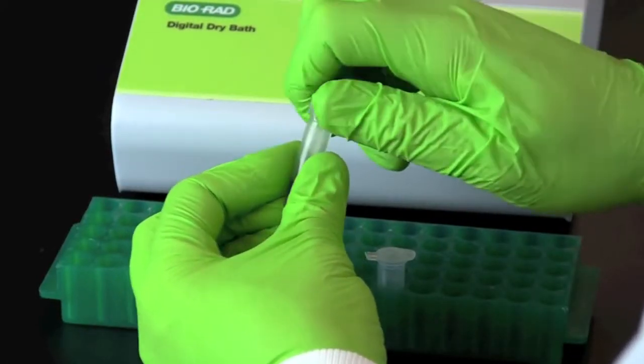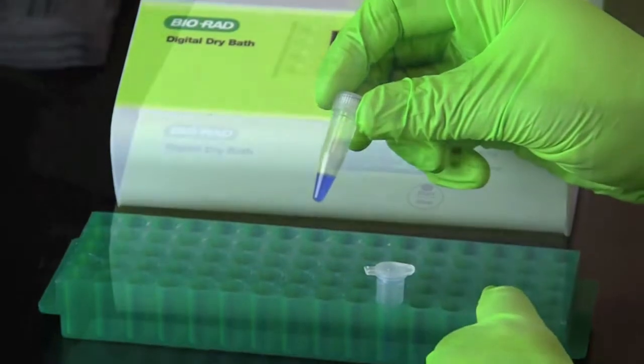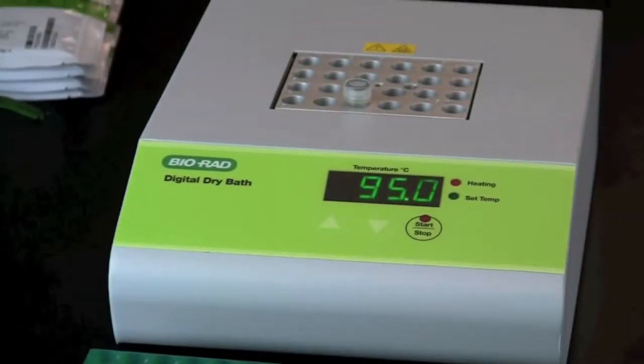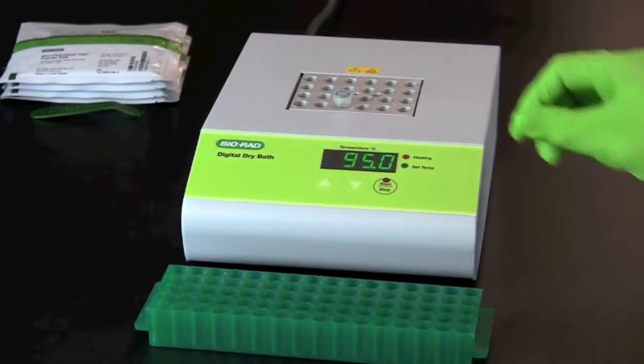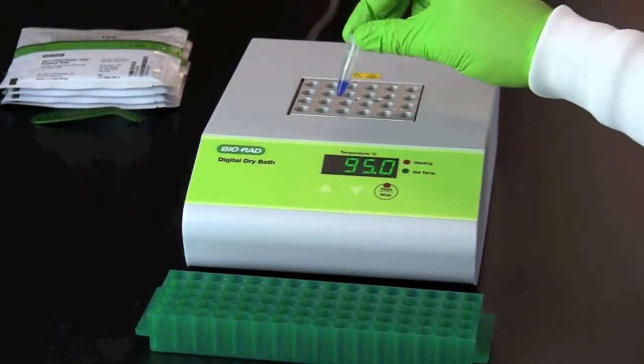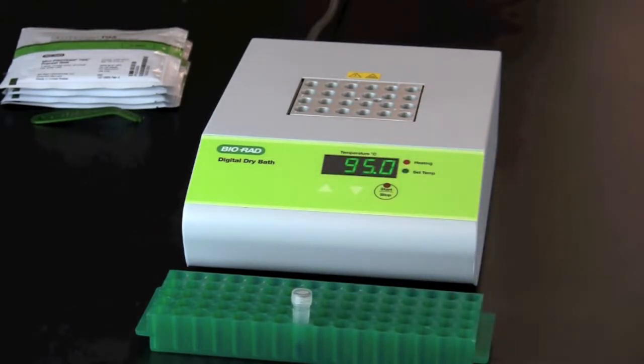Firmly attach the screw cap onto the tube, then heat the tube for 5 minutes at 95 degrees Celsius. This is a good stop point for this laboratory. You can proceed immediately to the next part of the lab or store the protein extracts at minus 20 degrees Celsius for up to 6 months.